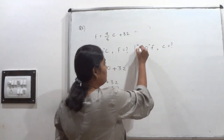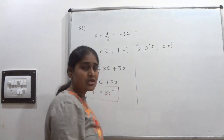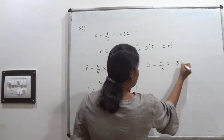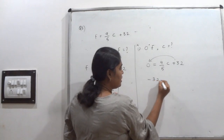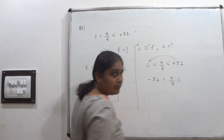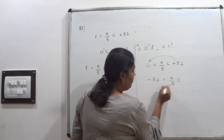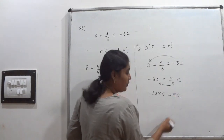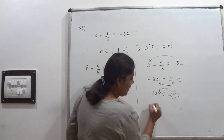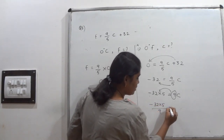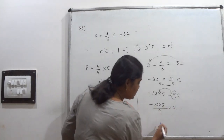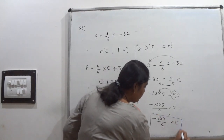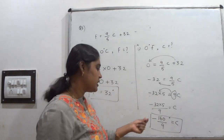Second option of part four: if Fahrenheit is 0 degrees, what is the Celsius temperature? Keep F equals 0 in the formula: 0 equals 9 upon 5 into C plus 32. Bring 32 to the other side: minus 32 equals 9 upon 5 into C. Multiply by 5 and divide by 9: C equals minus 32 into 5 upon 9, which is minus 160 upon 9 degrees Celsius. You can write it as a decimal or keep it as a fraction — both are correct.